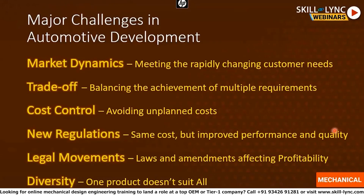Second is trade-off, which is very difficult to manage. For example, as a crash engineer I would say the product should crumple, but a durability engineer would say no — the product should not crumple because the strength will reduce. From a marketing point of view, someone might say they need a specific feature in the car, but the finance team would say there is no budget for that. So there has to be some compromise. This kind of trade-off happens everywhere throughout the automotive development phase.